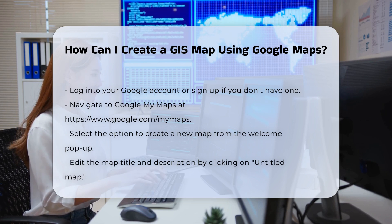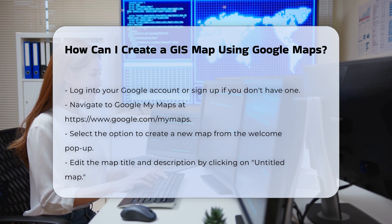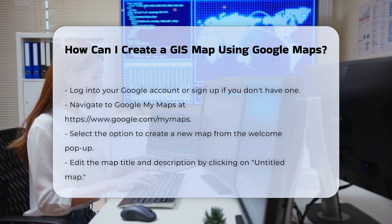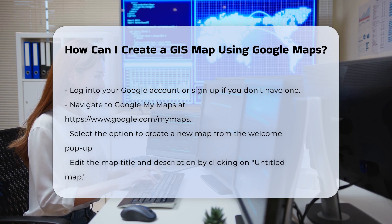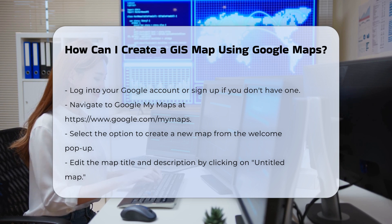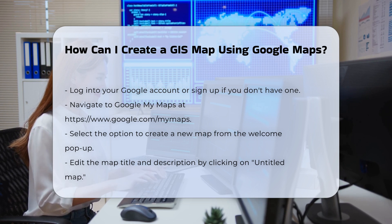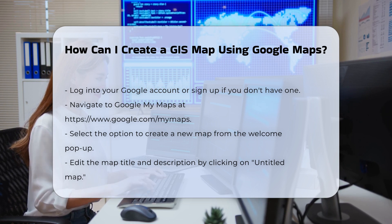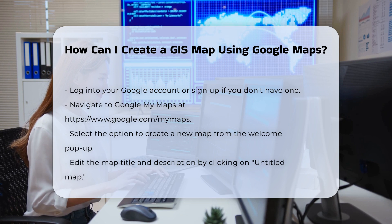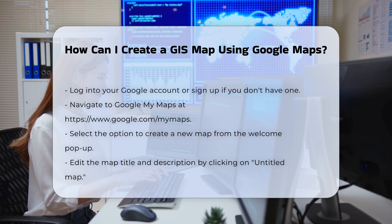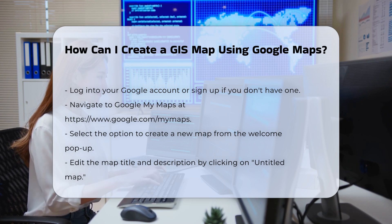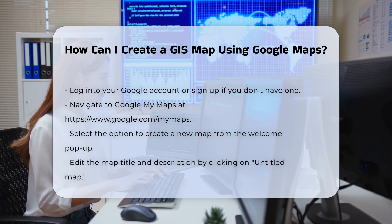Customize your map title and description. After creating the new map, click on the 'Untitled Map' text to edit the map title and description. You can input a title and a brief description to help identify your map.